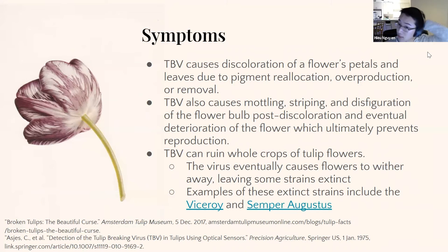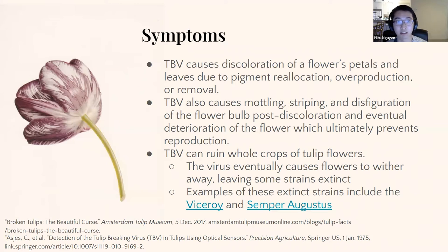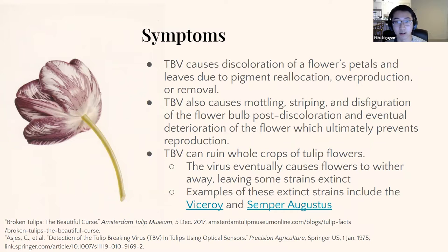For the symptoms of TBV, it causes discoloration of the flower's petals, with pigment reallocation and different kinds of variants of that. It also causes mottling and streaking discoloration, and this is the harmful effect.